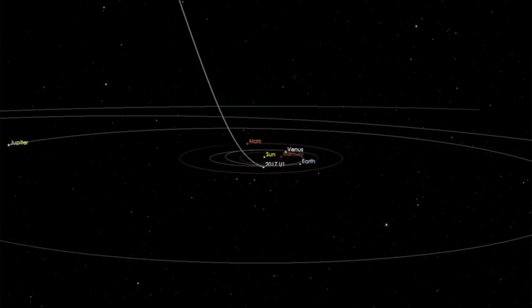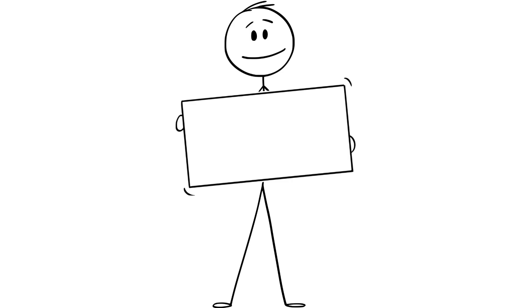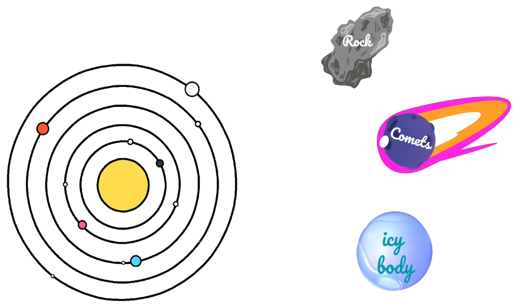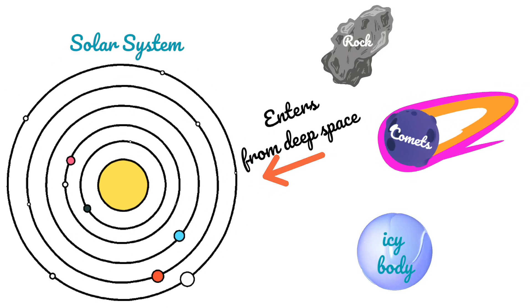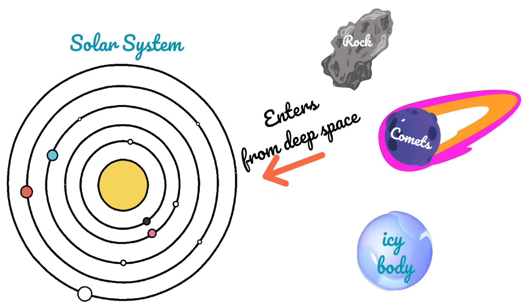We've had a few surprise visitors called interstellar objects. Okay, so what's an interstellar object? Simple, it's a rock, comet or icy body that doesn't belong to our solar system. It just comes in from deep space, says hi and then leaves forever.